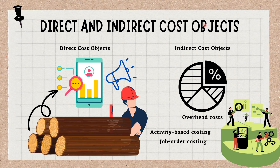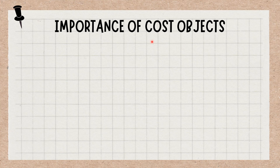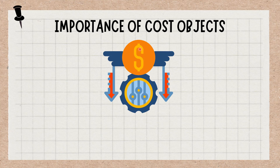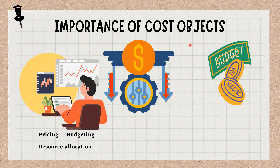Cost objects play a crucial role in cost accounting, as they allow businesses to track and control costs for different activities and products. By analyzing the costs associated with each cost object, businesses can make informed decisions about pricing, budgeting, and resource allocation. For example, if a business determines that the cost of producing a particular product is higher than its selling price, they may decide to discontinue that product or raise its price.